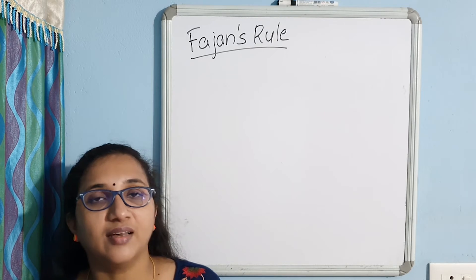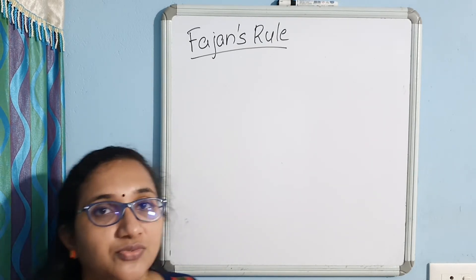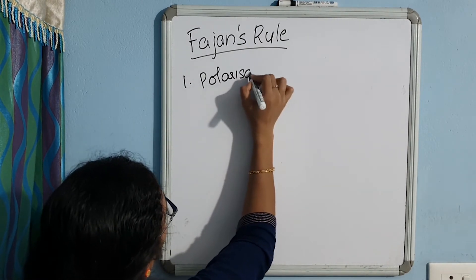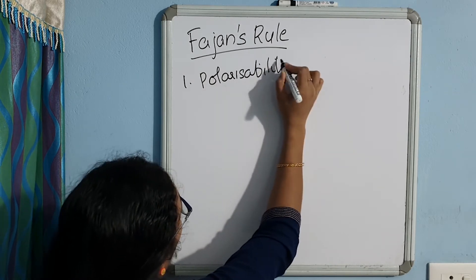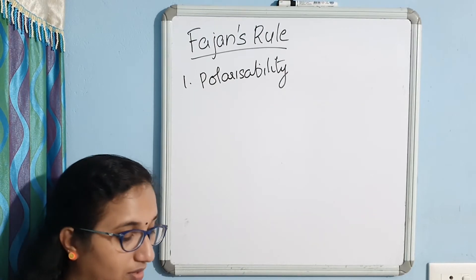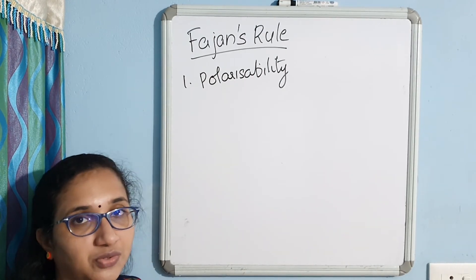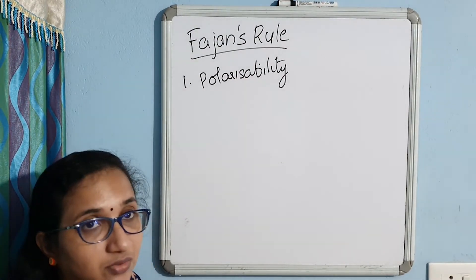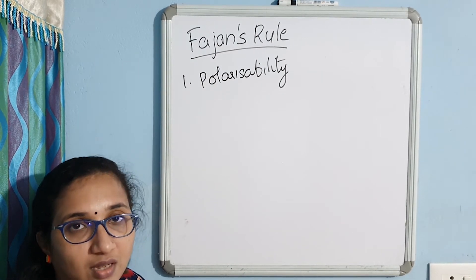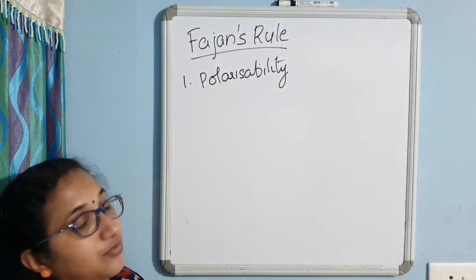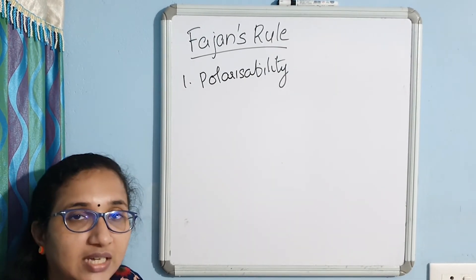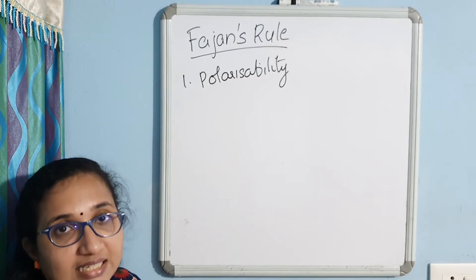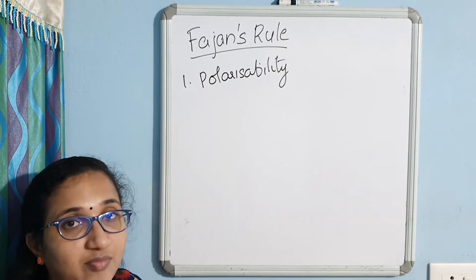Now let us see the polarizability of the anion. Just like cations have polarizing power, anions have polarizability. We can define polarizability as the tendency of the anion to get distorted by the cation. Anions are comparatively bigger in size, so how easily the anion's valence shell is distorted is called its polarizability.